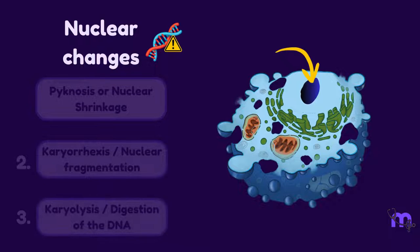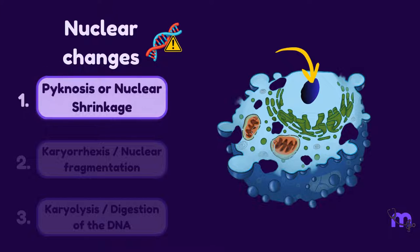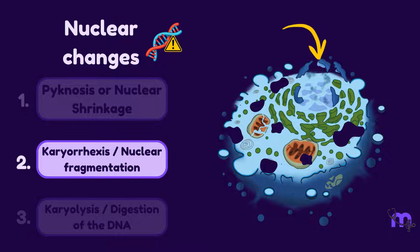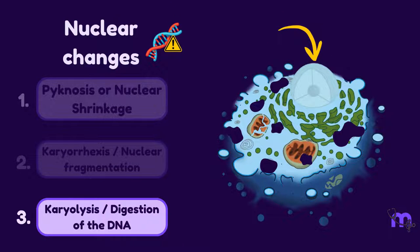The nuclear changes are due to the destruction of the DNA. They assume three forms: pyknosis — shrinkage and darkening; karyorrhexis — nuclear fragmentation; or karyolysis — a pale blue nucleus due to DNA's activity. Eventually, the nucleus disappears.